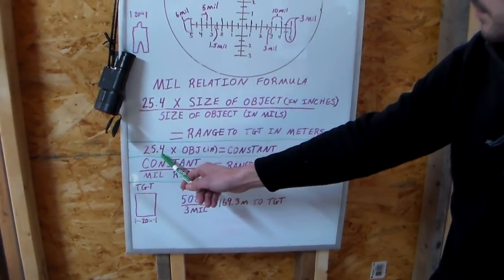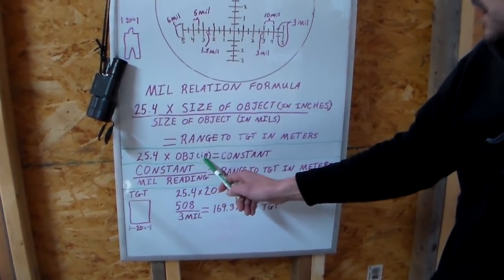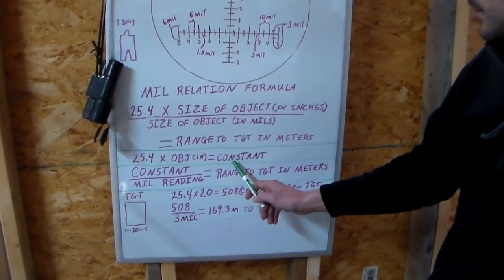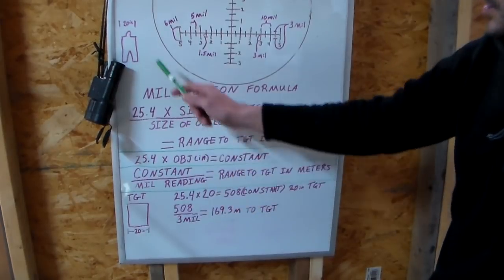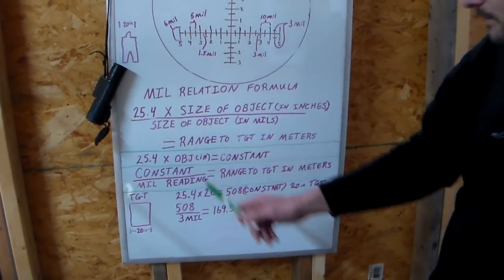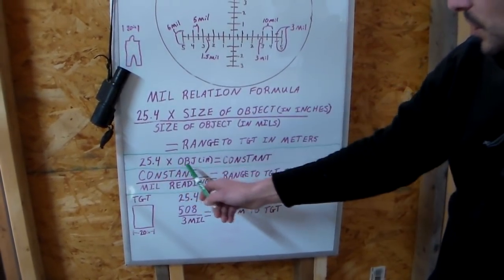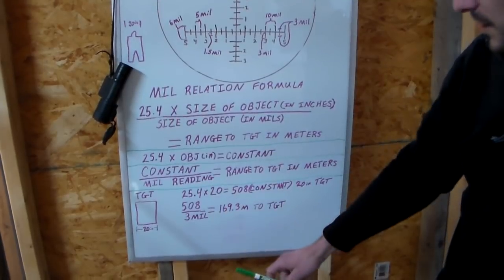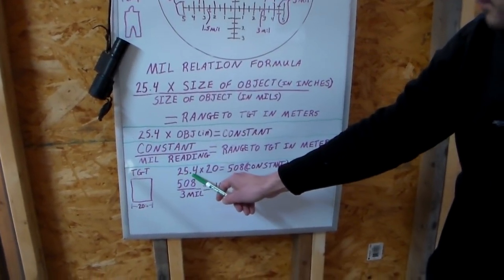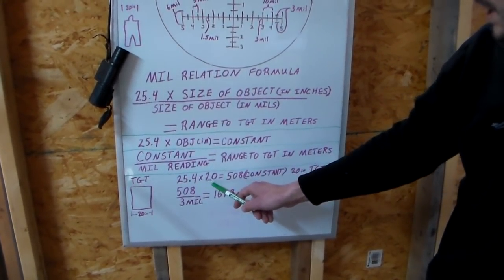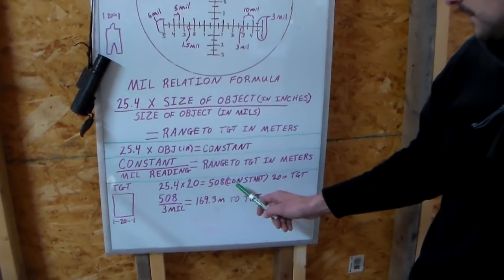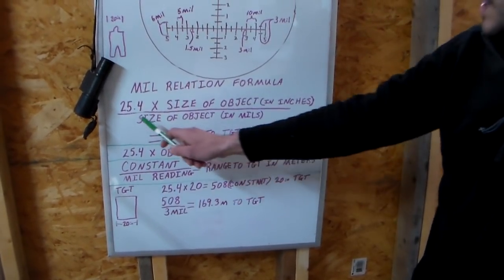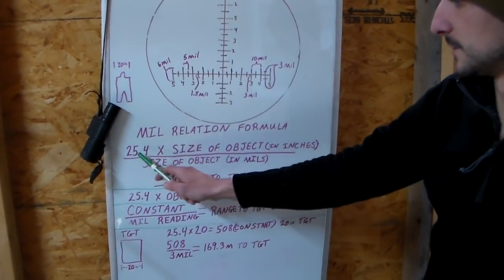So it's 25.4 times the object in inches is going to be your constant number. We know our object in inches is 20 inches. We've got a 20-inch target. So we're simply going to put 20 inches right here. So 25.4 times our 20 inches is 508. So we just worked the top half of this problem here.